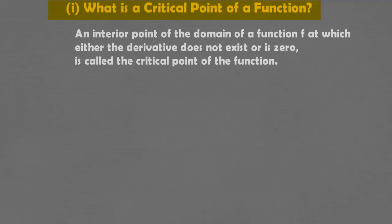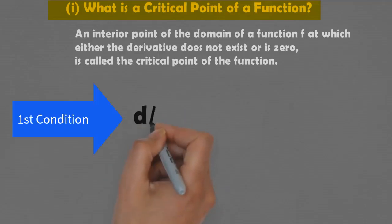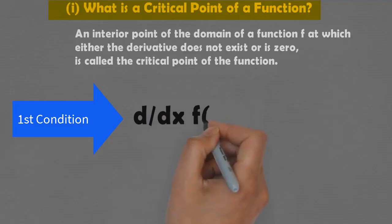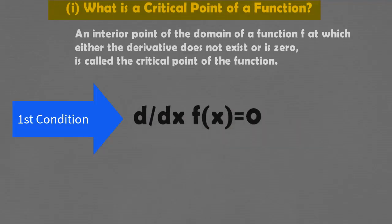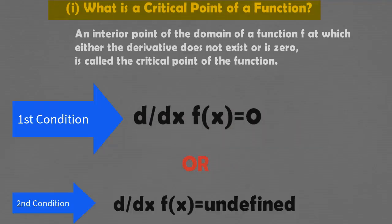There are two conditions for a point to be a critical point. The first condition is that the derivative of the function is zero, that is, d/dx of f(x) is equal to zero. The second condition is that the derivative of the function is undefined, that is, it does not exist. If any of the two conditions is satisfied, the point is a critical point.